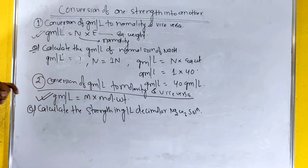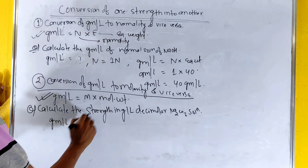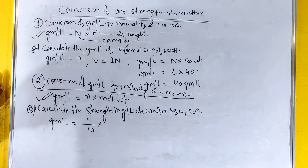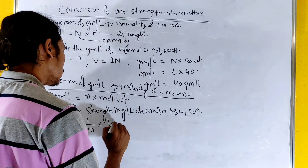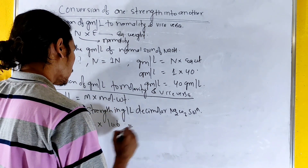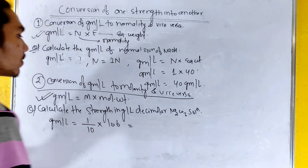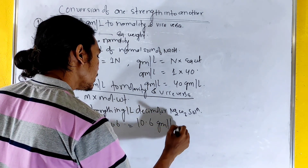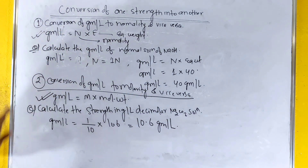Decimolar means 1 by 10, so gram per liter equals 1/10 into molecular weight of Na2CO3. The answer is 10.6 gram per liter.